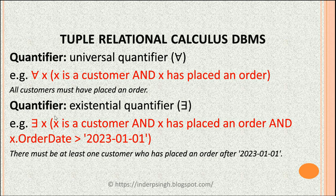The second quantifier is the existential quantifier. Its symbol is read as 'there exists' or 'any', where 'any' means one or more.